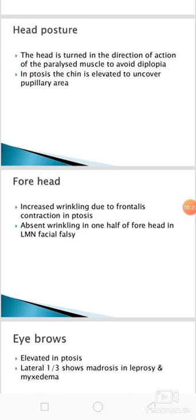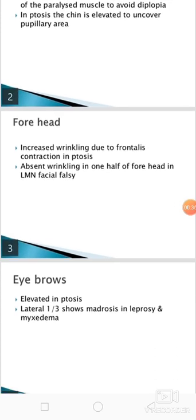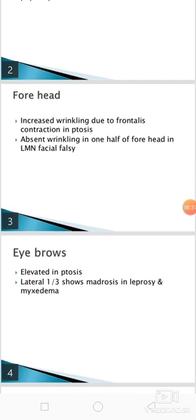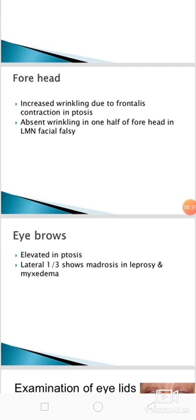First we should know about the head posture. The head is turned in the direction of action of the paralyzed muscle to avoid diplopia. In ptosis, the chin is elevated to uncover the pupillary area. The increased wrinkling due to frontalis contraction occurs in ptosis, whereas the wrinkling is absent in one half of the forehead in case of lower motor neuron facial palsy.